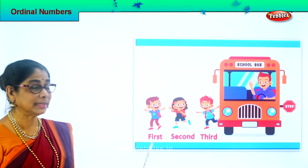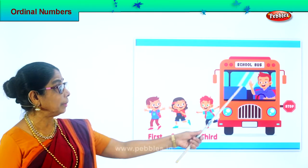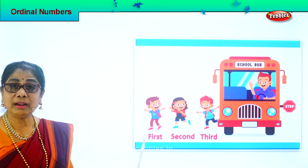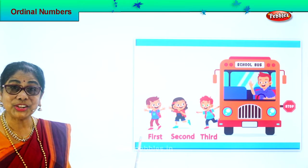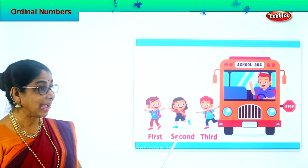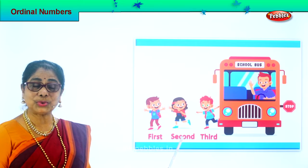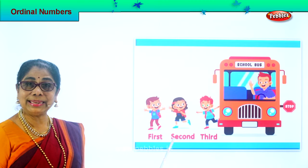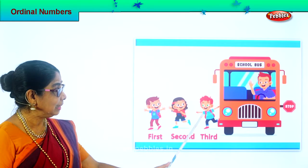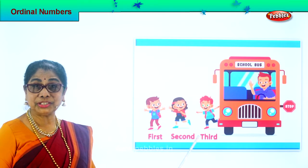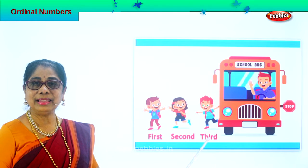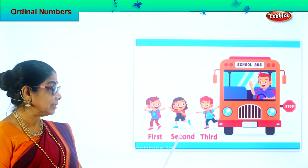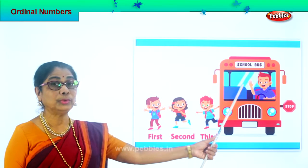See who is first here. The little boy has come out first from the bus and he's very happy. Spell first: F-I-R-S-T. First. The little girl says, 'I'm second. I came out second from the school bus.' Spell second: S-E-C-O-N-D. Second. And the little boy says, 'I'm third.' Spell third: T-H-I-R-D. Third. So these are ordinal numbers: first, second, third, and so on.